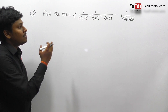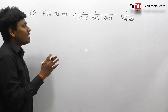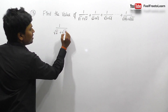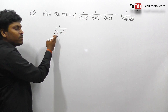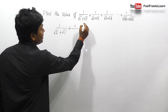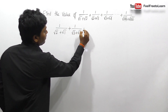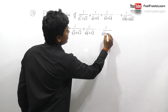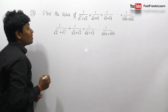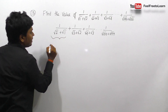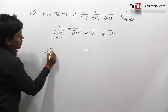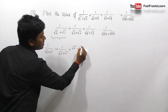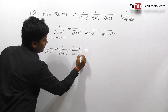This is one of the most important questions for SSC exams and railway exams — repeatedly asked in many competitive exams. First, I'm going to rewrite this expression: 1/(√2+√1), then the second term as 1/(√3+√2), the third term as 1/(√4+√3), and similarly this goes on till 1/(√100+√99).